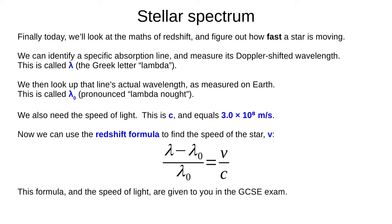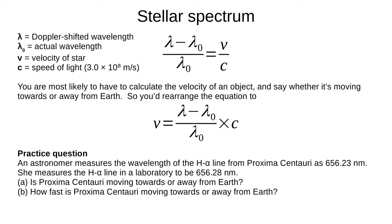We'll finish today with the maths of red shift and calculate how fast stars are moving. First, we identify a specific absorption line in a star's spectrum and measure its apparent Doppler-shifted wavelength. We call this lambda. Then, we look up that line's actual wavelength as measured on Earth. This is lambda nought, the wavelength measured at a speed of zero. We also need the speed of light, which is 3 times 10 to the 8 metres per second. Now, we can use the red shift formula shown here to find v, the speed of the star. This formula and the speed of light are given at the front of the GCSE exam paper. You don't need to memorise them. The equation might look a little complex, but it's simple enough. You can use it and rearrange it just like any other equation. In the GCSE, you're most likely to need to calculate velocity using the rearrangements shown here. You might like to memorise this version of the equation.